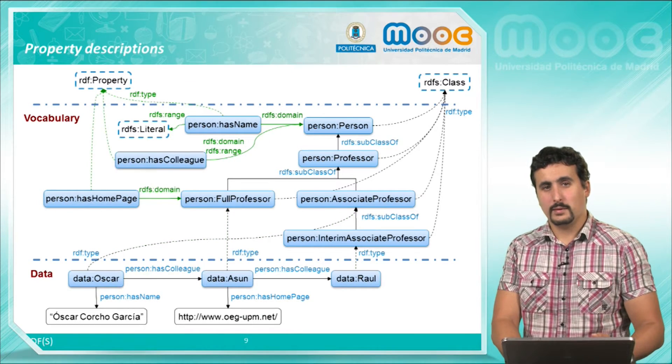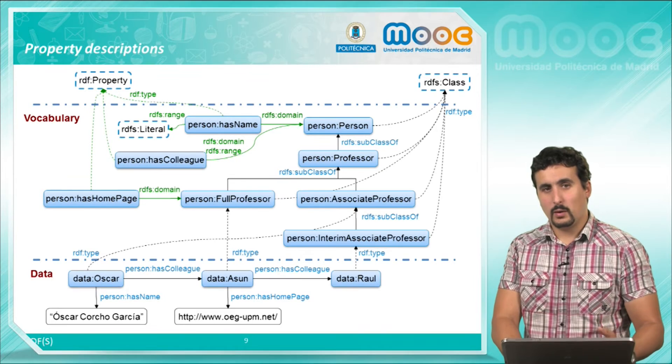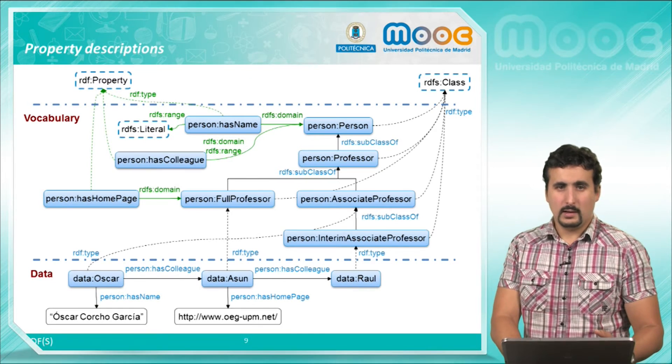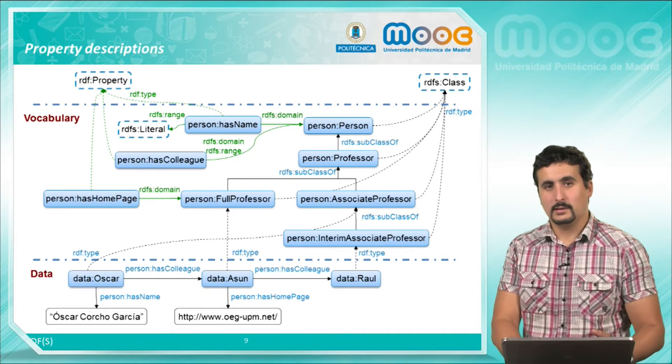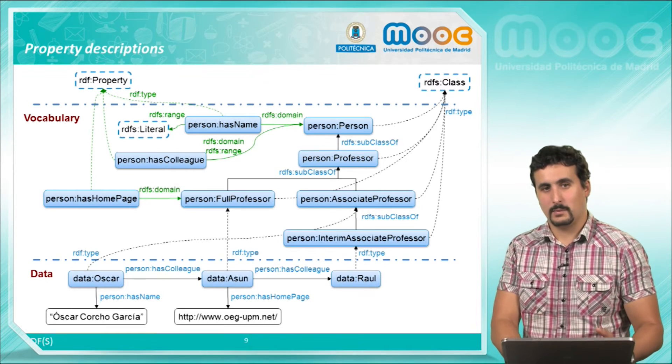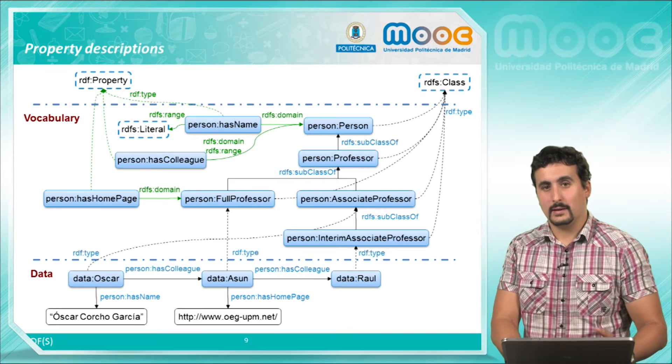As well with RDF-S we introduce more detailed description of the properties. We see here how HasName, HasWebPage and HasCollege are stated as RDF properties. As well we are defining their domain and range.